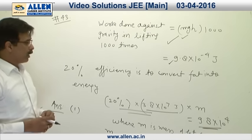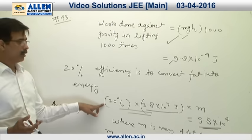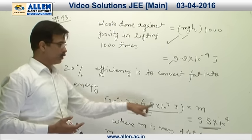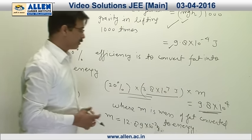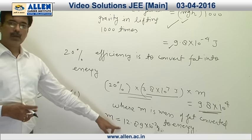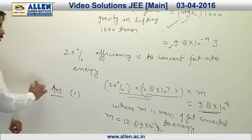But according to question, 20 percent is utilized. Suppose M mass of fat gets converted to M into 20 percent into the rate equals required energy. On solving this, we get M equal to 12.89 into 10 to the minus 3 kg. Hence our answer is 1.